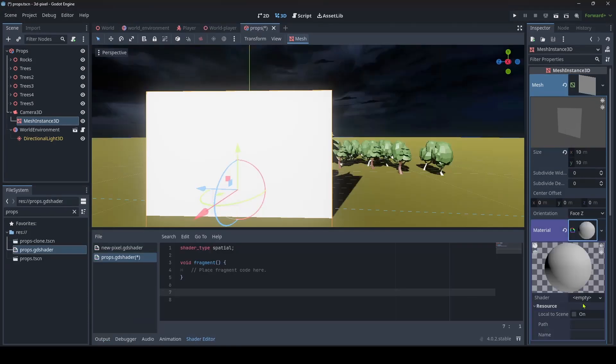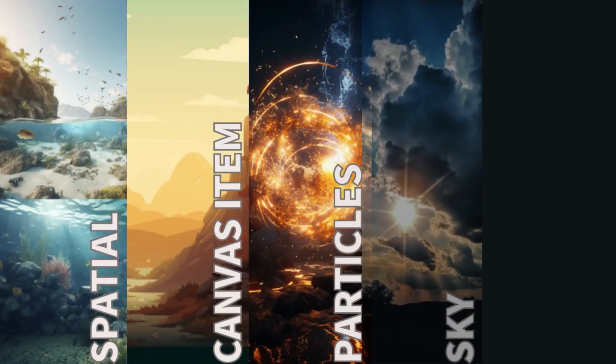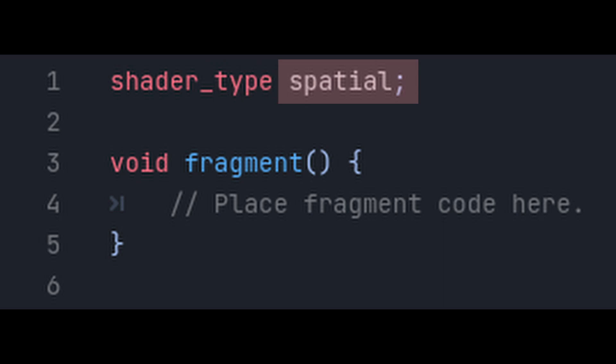Add a shader material to the mesh, and you will end up with this template code. We start by defining the shader type. Since we are writing a shader for a 3D environment, we need a spatial shader.